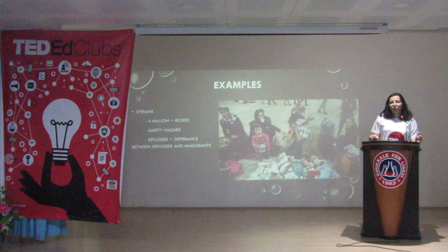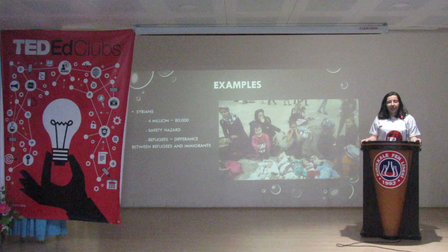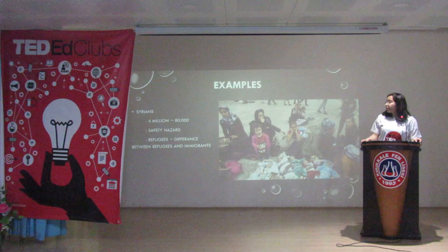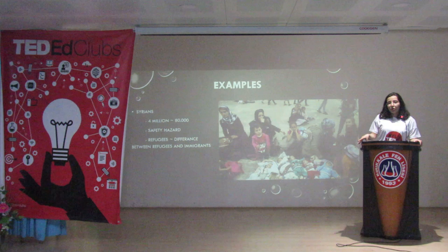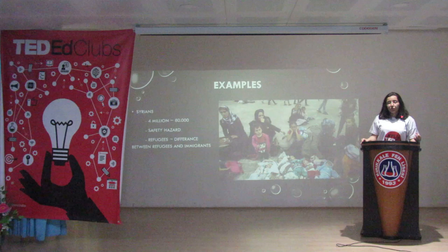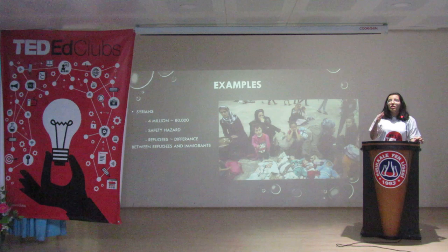If we talk about immigrant problems, we have to mention Mexican and Syrian immigrant problems. In my country, nearly 4 million Syrians are living, and 80,000 of them are still here. They came because of safety hazards. But actually, they are not immigrants — they are refugees. We should know the difference between being a refugee and an immigrant. A refugee is someone who is forced to flee his or her home country, but immigrants choose to immigrate.